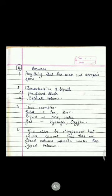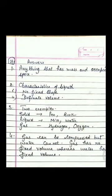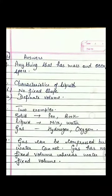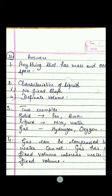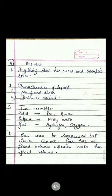Part H: Define matter — anything that has mass and occupies space. Two characteristics of liquid: no fixed shape, definite volume. Two examples each of solid, liquid, and gas — solid: pen, book; liquid: milk, water; gas: hydrogen, oxygen. How is gas different from water in volume and compressibility? Gas can be compressed but water cannot. Gas has no fixed volume whereas water has a fixed volume.